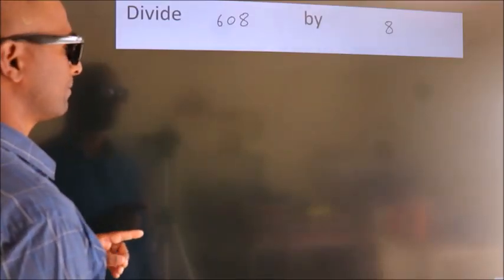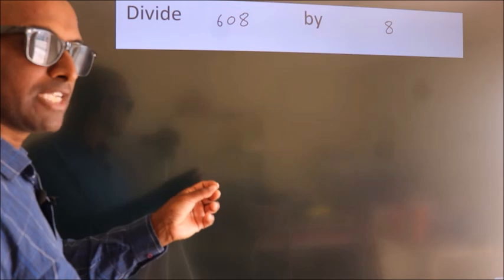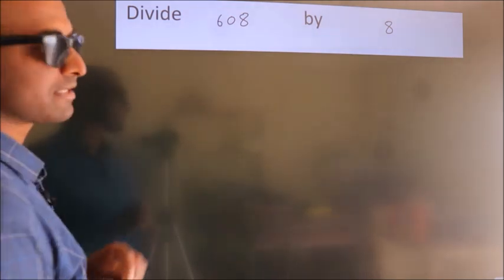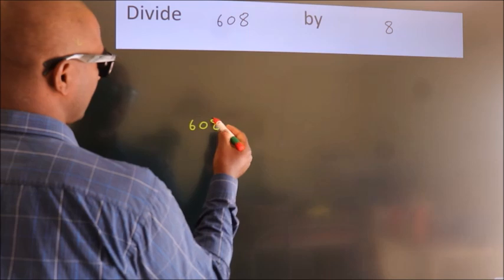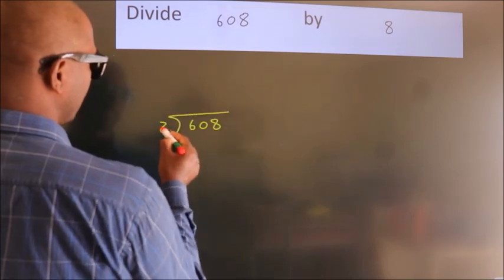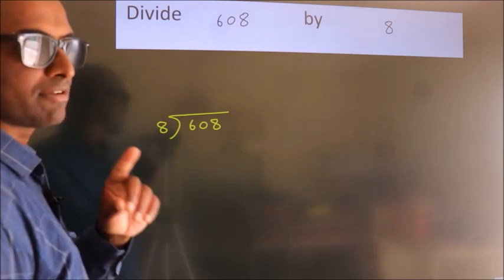Divide 608 by 8. To do this division, we should frame it in this way. 608 here, 8 here. This is your step 1.